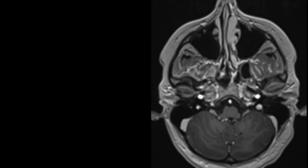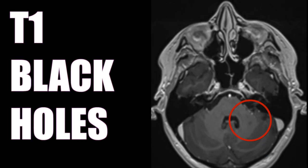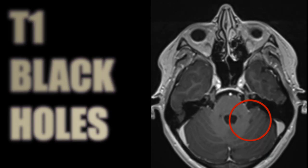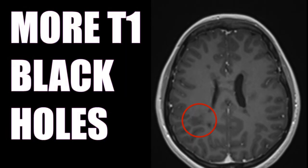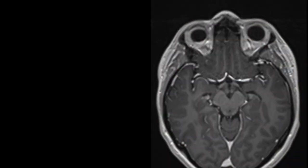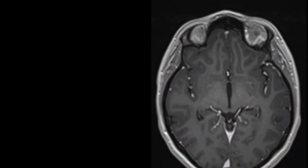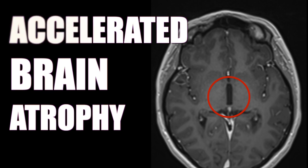The new scan did reveal however several new T1 black holes — areas where the periods of inflammation were so severe that they literally ate away at the tissue of the brain, leaving literally a black hole. It's also important to note that on the follow-up scan we appreciate accelerated brain volume loss, or accelerated brain atrophy. Here in red you see the third ventricle — in a woman this age that space should be closed, and yet it's pretty broad.